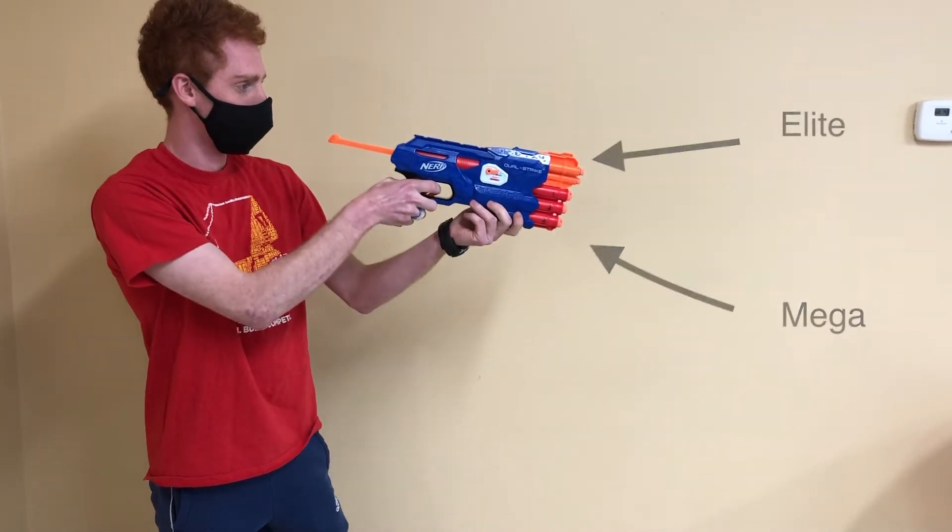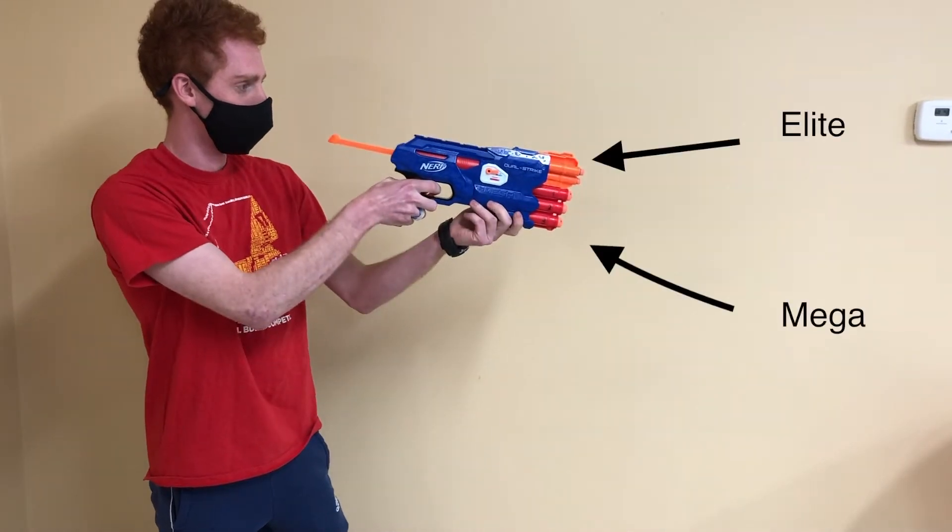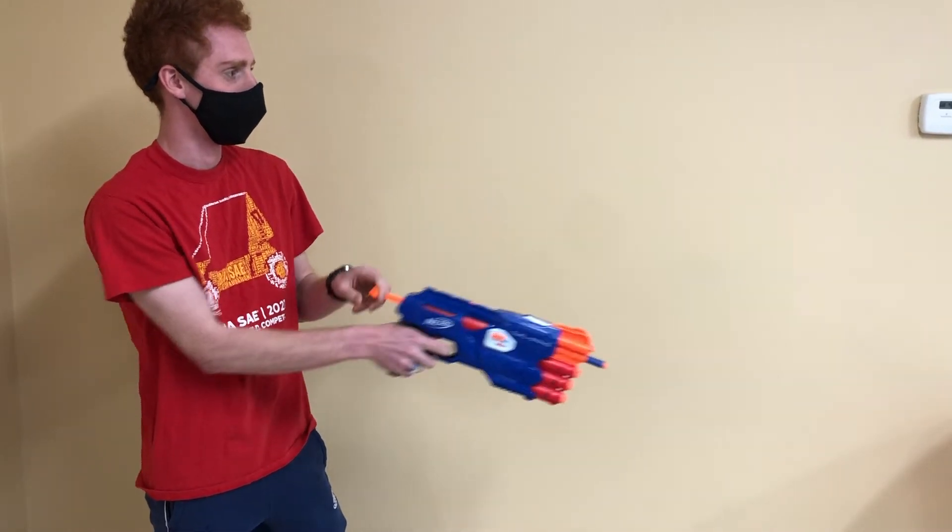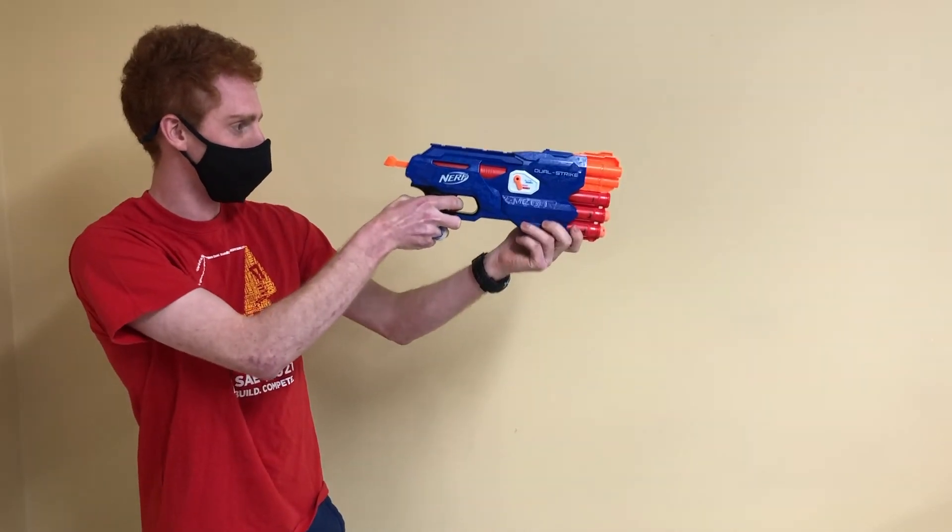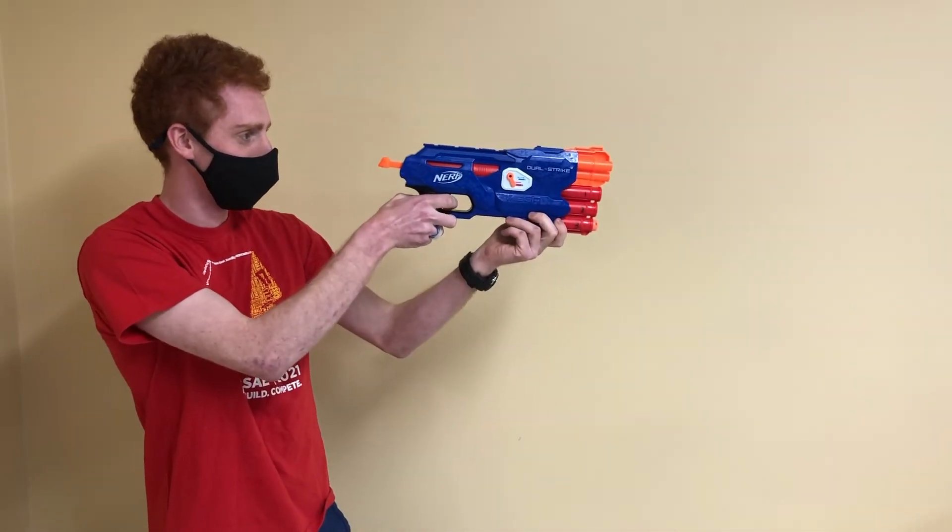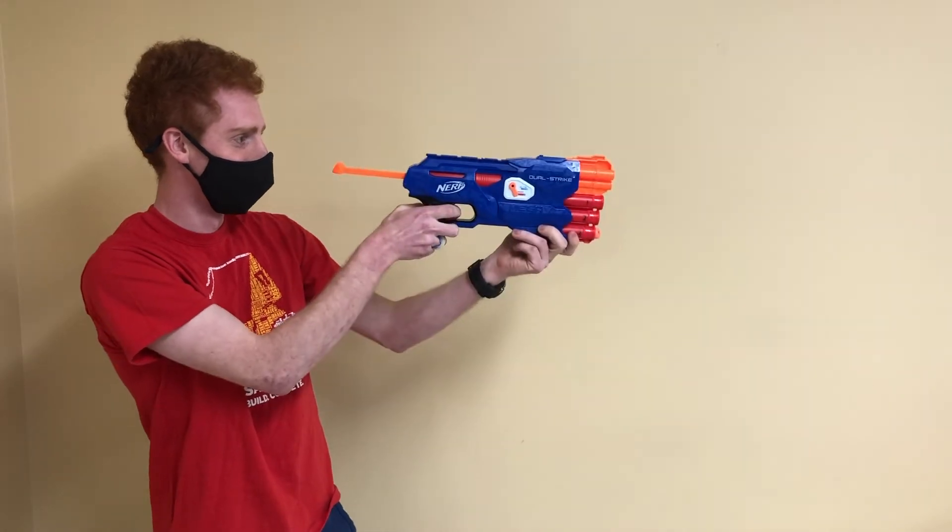This Nerf blaster has two firing modes, Elite and Mega, each with their own specific set of darts. The preferred firing mode can be set via the switch on the side of the blaster. In order to fire darts from the blaster, cock the loading piston by pulling it back until it clicks and pull the trigger to actually launch one dart at a time.